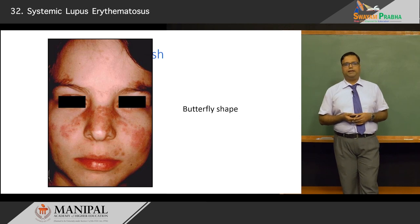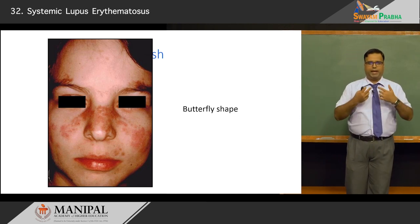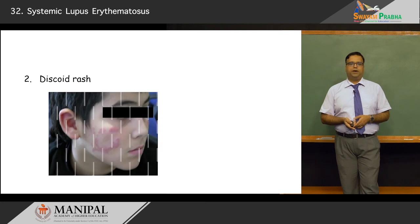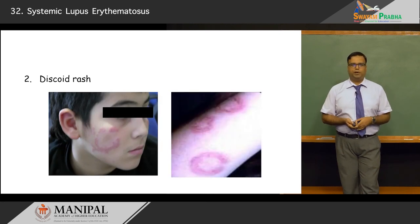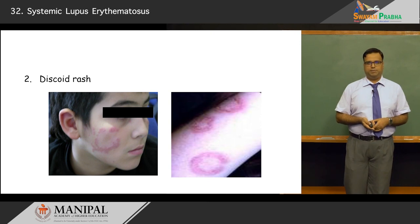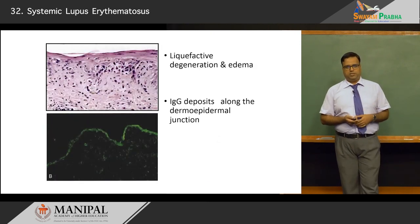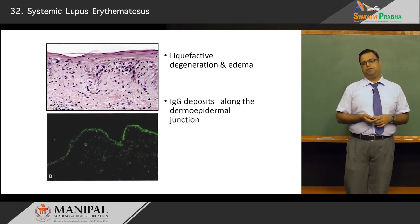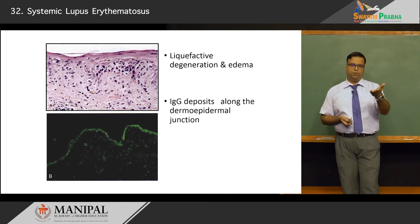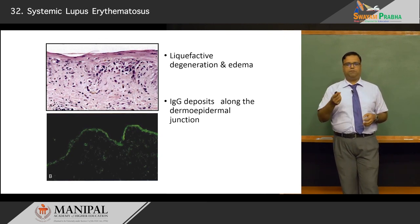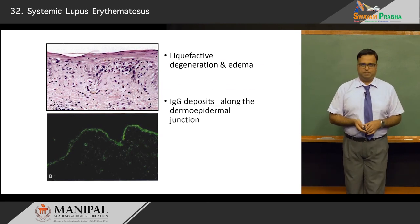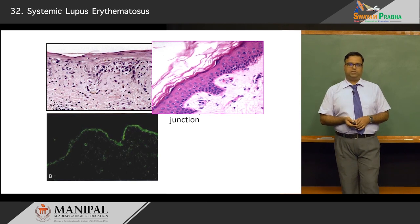The discoid rash produces disc or carom-coin-like lesions on the face and extremities. In both malar and discoid rash, liquefactive degeneration of the basal layer and edema are seen. Indirect immunofluorescence demonstrates deposition of immunoglobulins along the dermo-epidermal junction — shown on screen as a green band at the junction, illustrating antibody deposition and basal layer vacuolar degeneration.